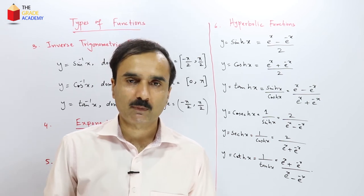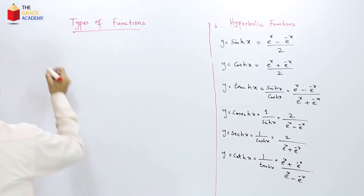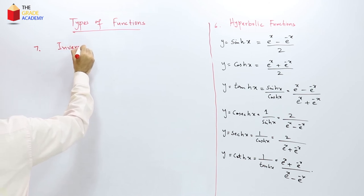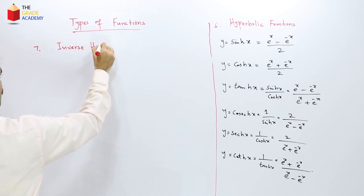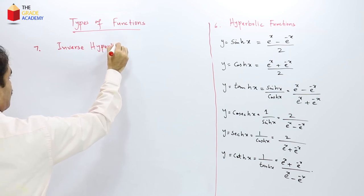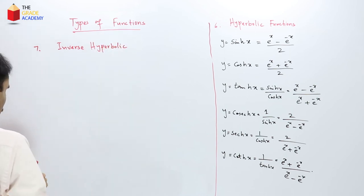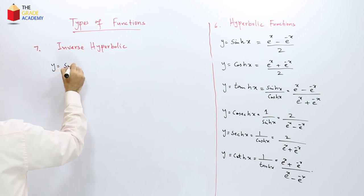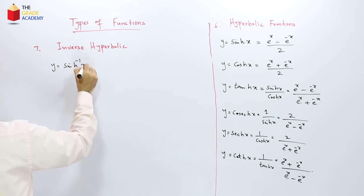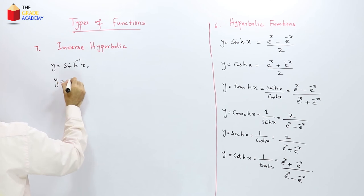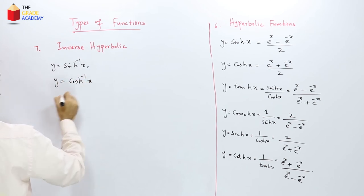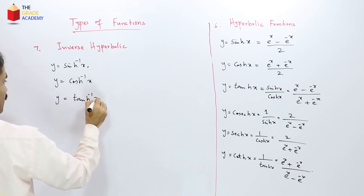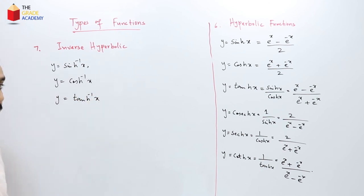After hyperbolic functions, we have inverse hyperbolic functions: y = sinh⁻¹(x), y = cosh⁻¹(x), and y = tanh⁻¹(x).